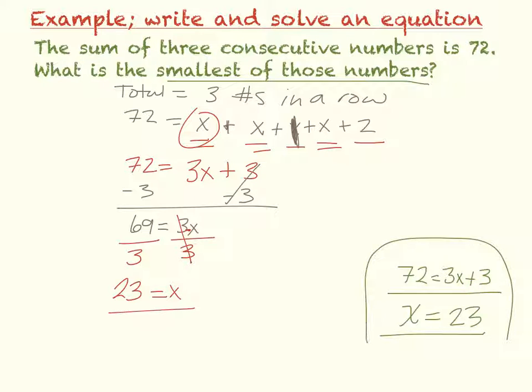Now if I asked you to find all of the numbers, then you would have to take twenty-three and find X plus one, which would be twenty-four, and then twenty-five. Those would be the three consecutive numbers. However, in this case, all I wanted you to do was find the smallest number, which is twenty-three.